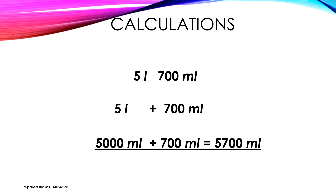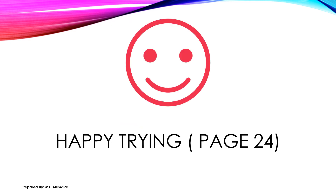So I put 5000 milliliters, then add the 700 milliliters: 5000 plus 700. Use the formal addition method I've taught you, and the answer is 5700 milliliters. That's the working for Challenge 2 question 2. You can also look at the example in the textbook.